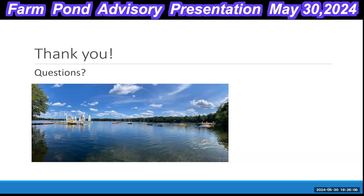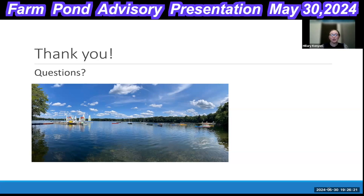To define the trophic classification terms used: oligotrophic means low nutrients — indicative of clear water, good secchi clarity, and low aquatic plant and algae growth. Mesotrophic means moderate nutrients — moderate plant growth, moderate algae growth, moderate water quality. Eutrophic means high nutrients — very high plant growth, high phytoplankton and algae growth, and high productivity.